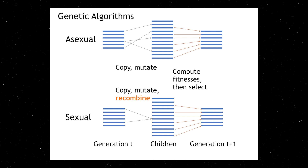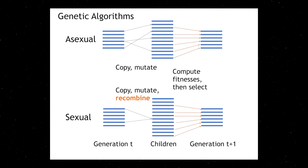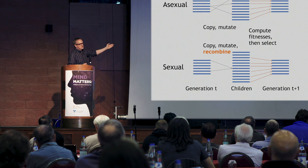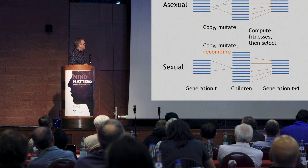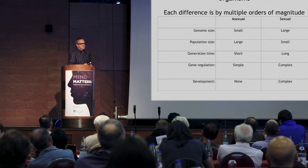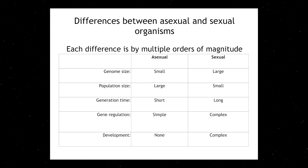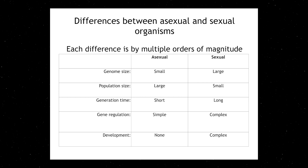Nature's first algorithm: we have things which copy, they mutate, and they are selected, and that repeats. The sexual algorithm is different in that you copy but recombine. So we get each new organism as a mixture of the previous genomes, and then select. These are different algorithms, and perhaps it's not surprising that they seem to produce very different results.